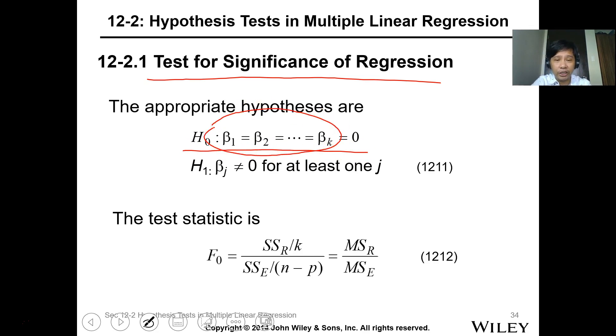The alternative is that at least one of the coefficients has a value not equal to zero, meaning there's a regression relationship between one of the variables and your response variable. The test statistic is using the F-test. The F-test is SSR, sum of squares of regression, divided by k over sum of error divided by n minus p.